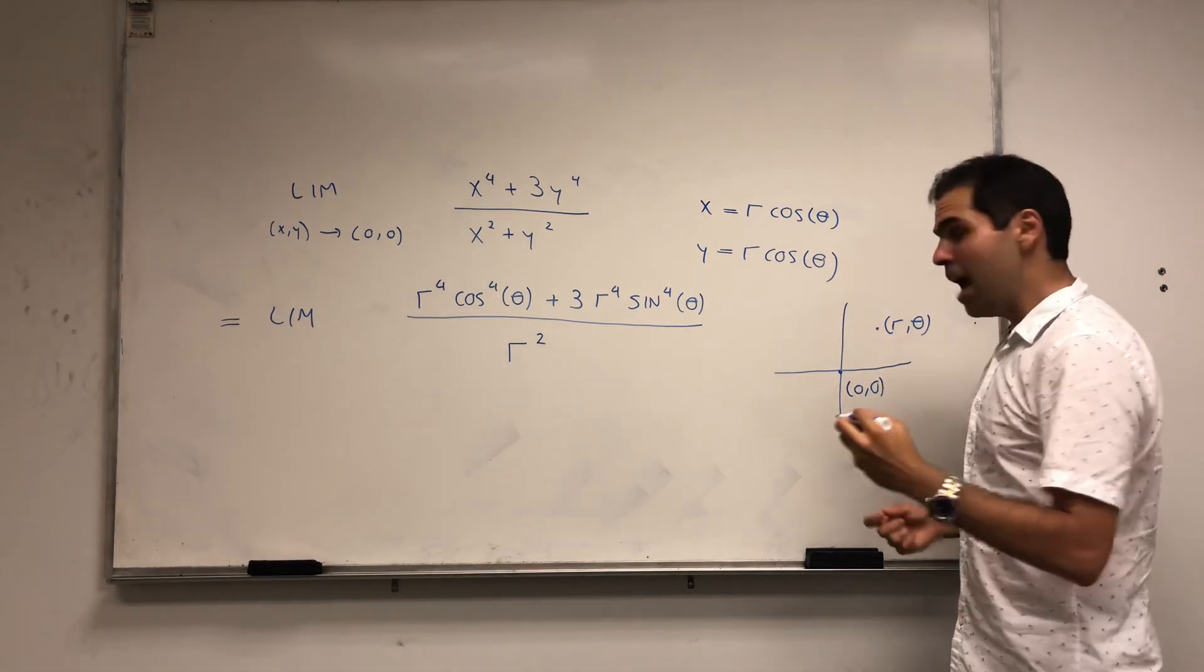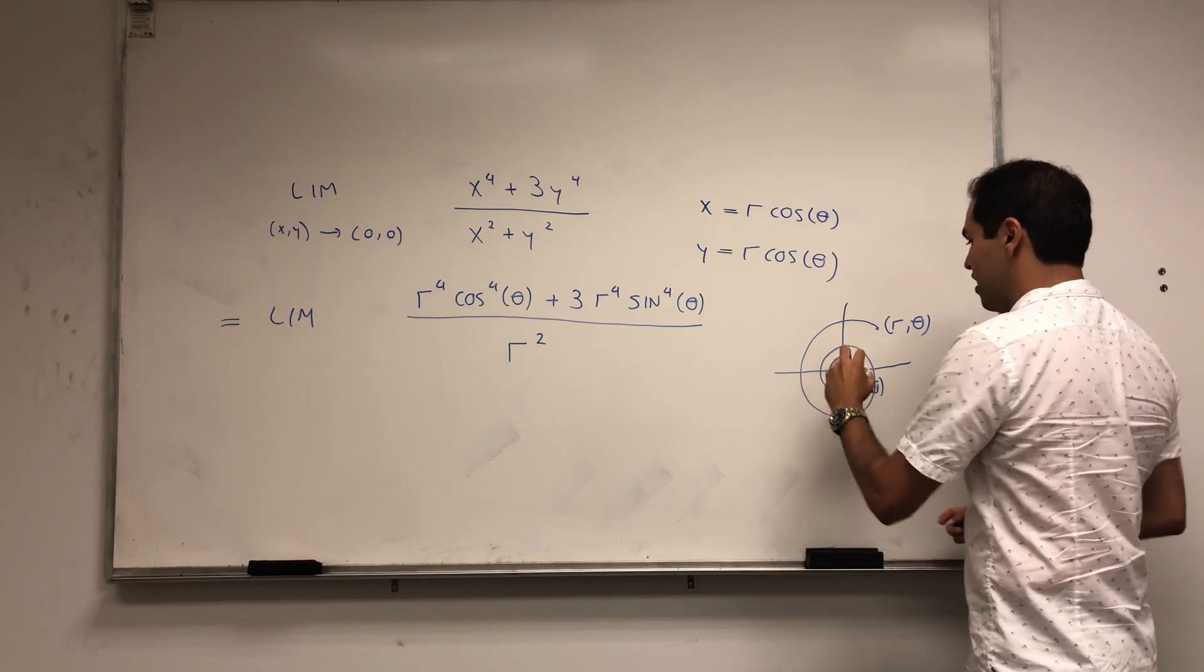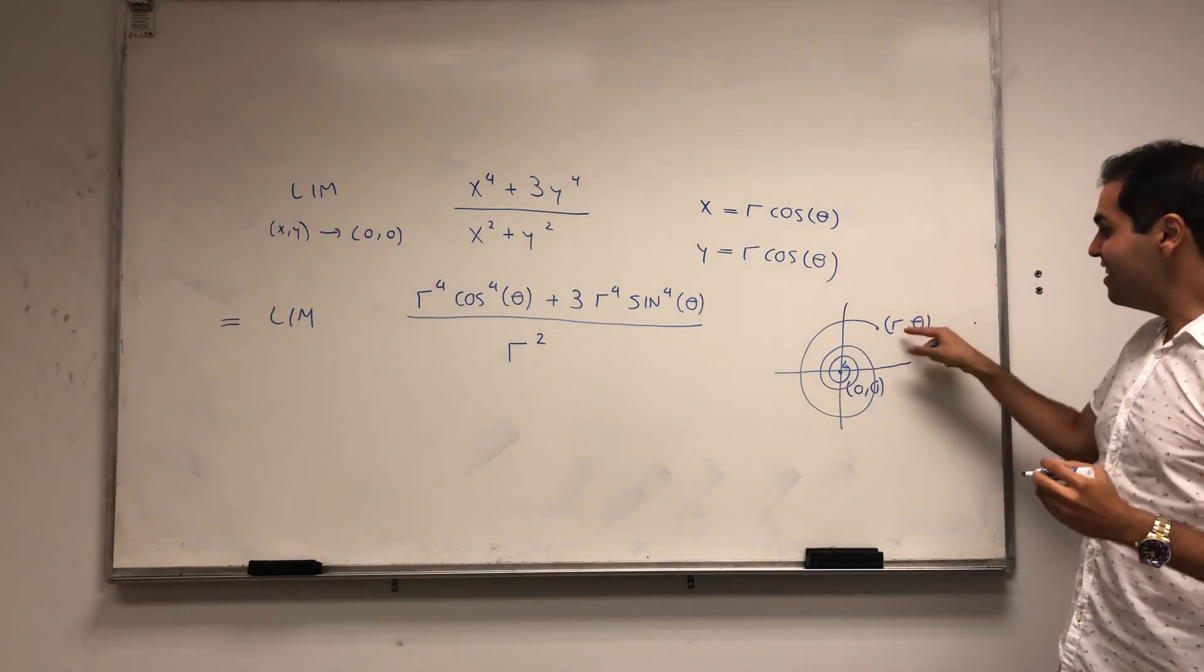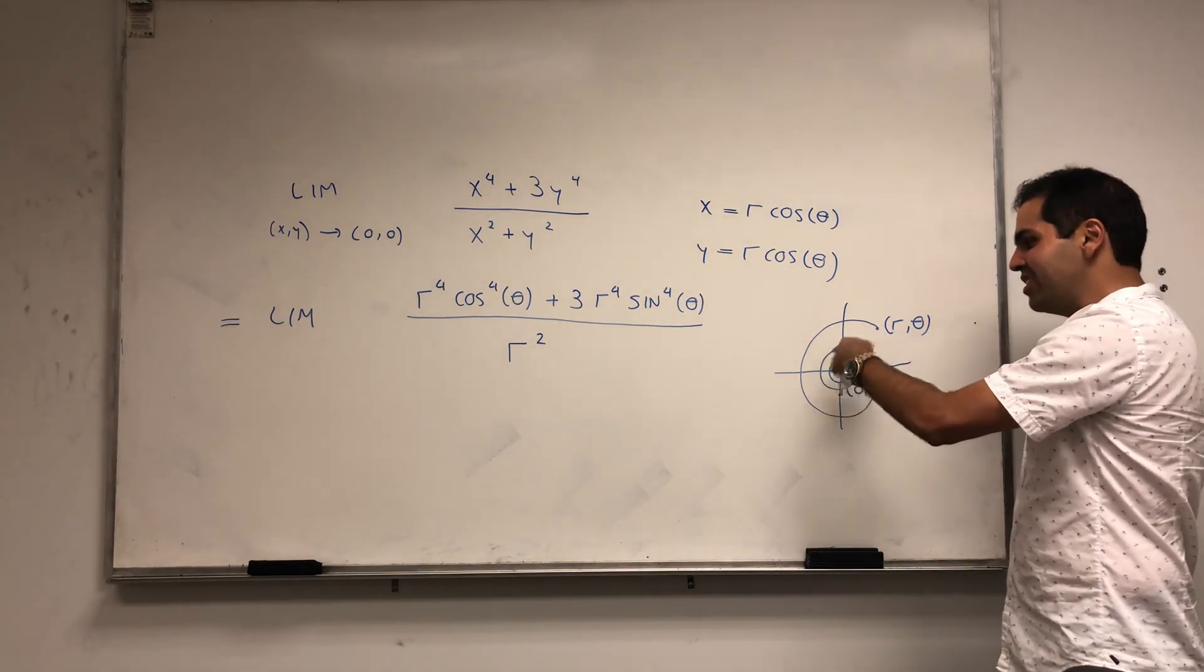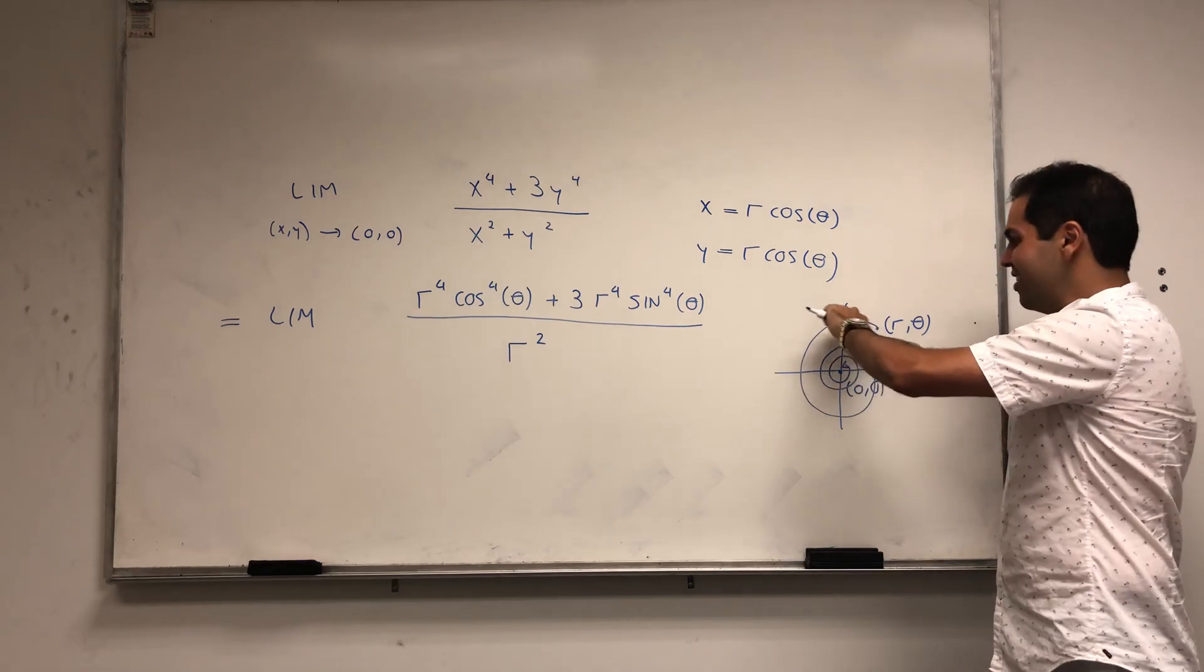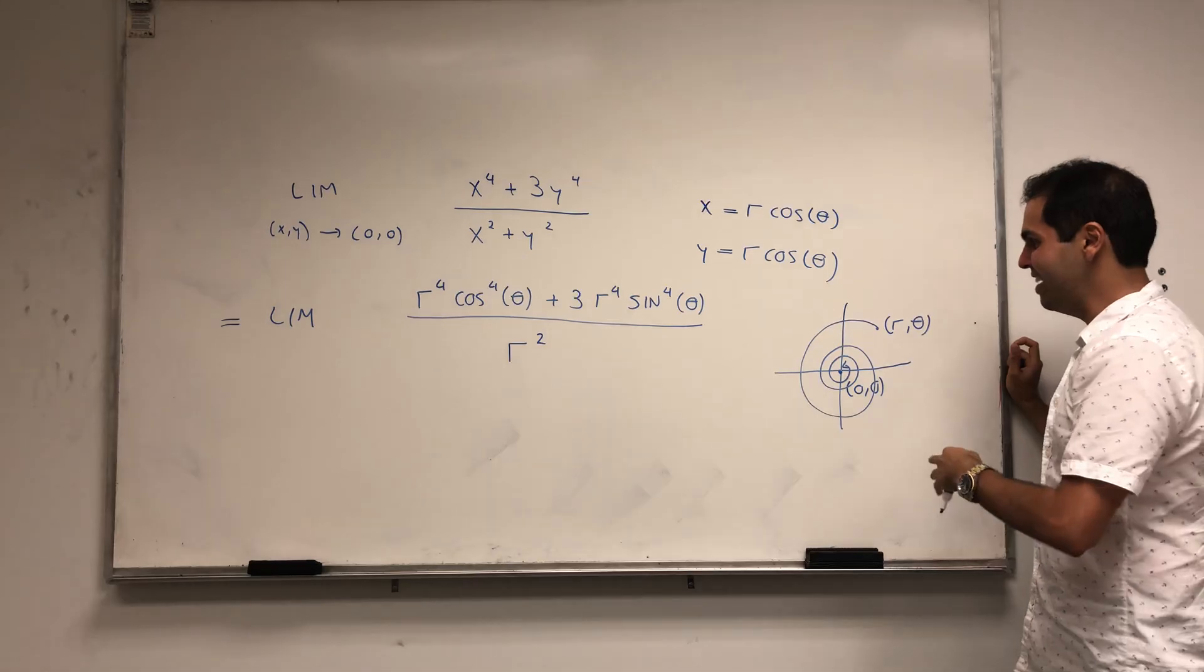What could happen, possibly, is that you just spiral into this limit. And while it is true that r goes to 0, it is not necessarily true that theta goes to 0. Because you see here, theta just goes between 0 and 2π infinitely many times.